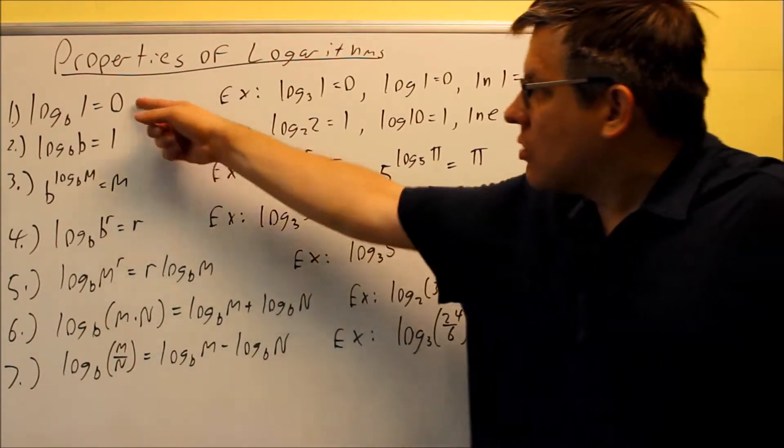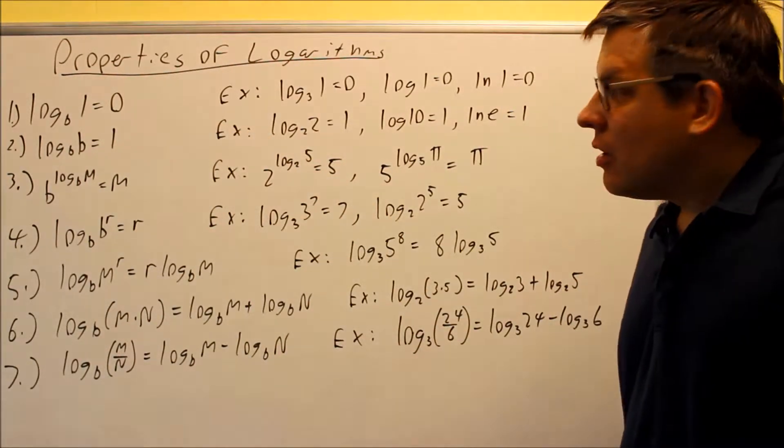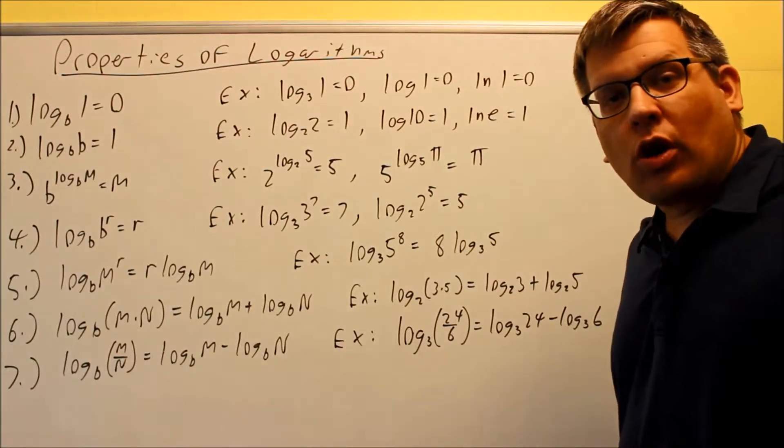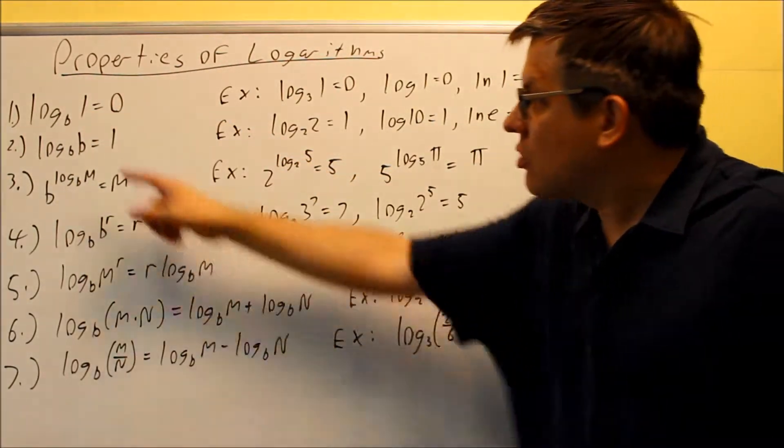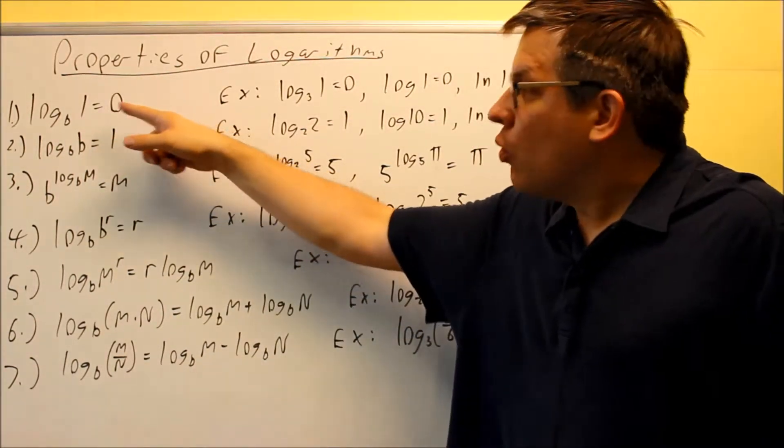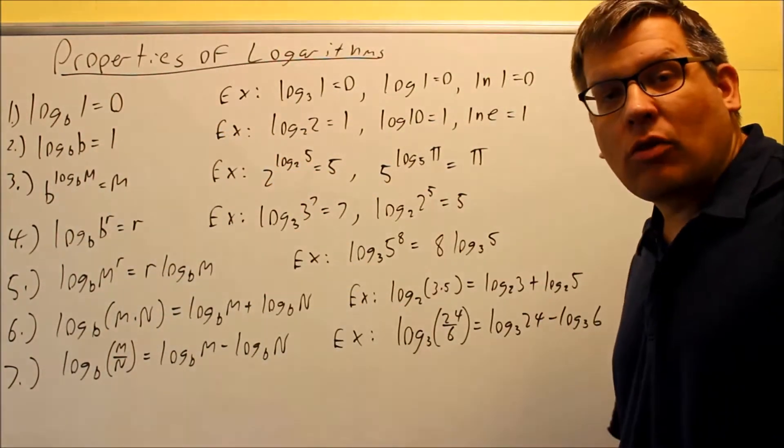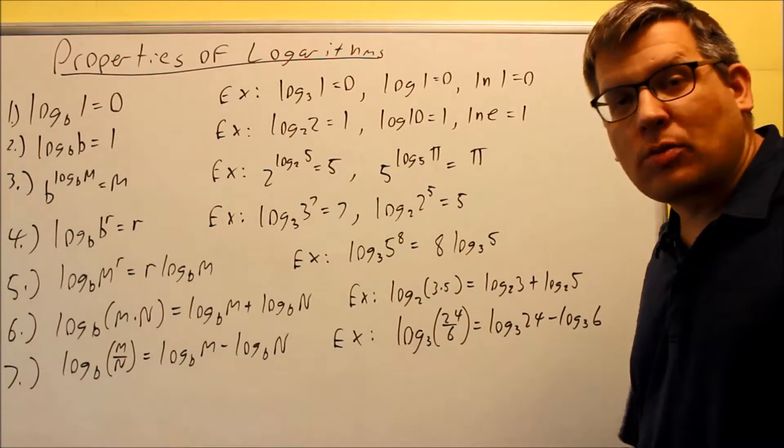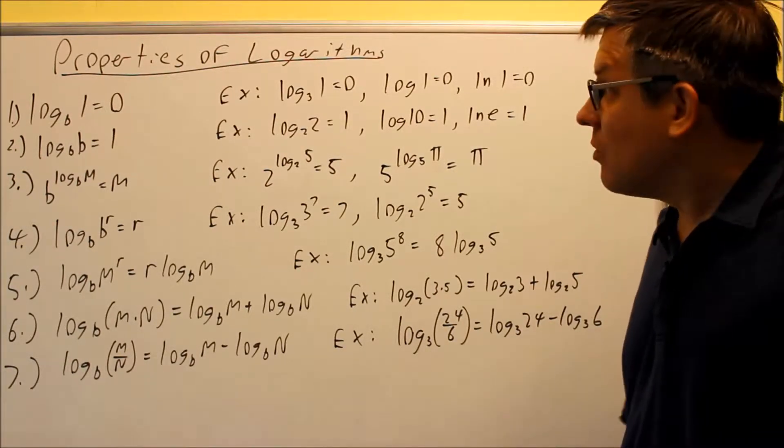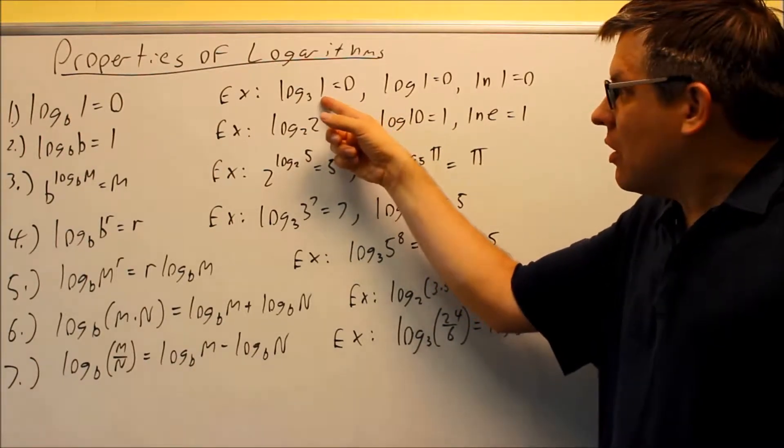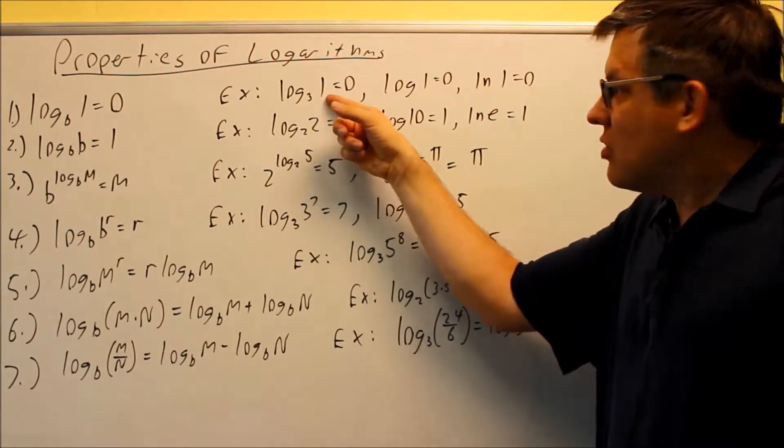This is also where we get that identity - anything raised to the 0 power equals 1. If I change this from log form to exponential, I have B^0 = 1. It all comes from that graph of the log, where it goes through (1,0) as the x-intercept. So it doesn't matter what the base is. As long as you put a 1 after it, it equals 0.